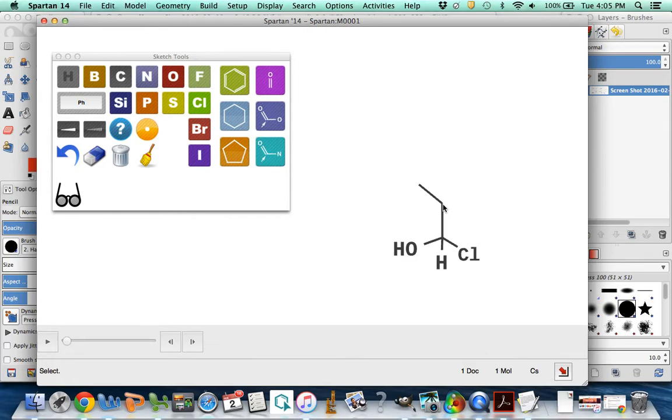This carbon is not chiral. Again, it has two hydrogens attached to it. Those hydrogens are the same thing, so it's not chiral. And this one is definitely not chiral because it's a CH3 group. Three of the four things attached to it are the same, so it's not chiral.